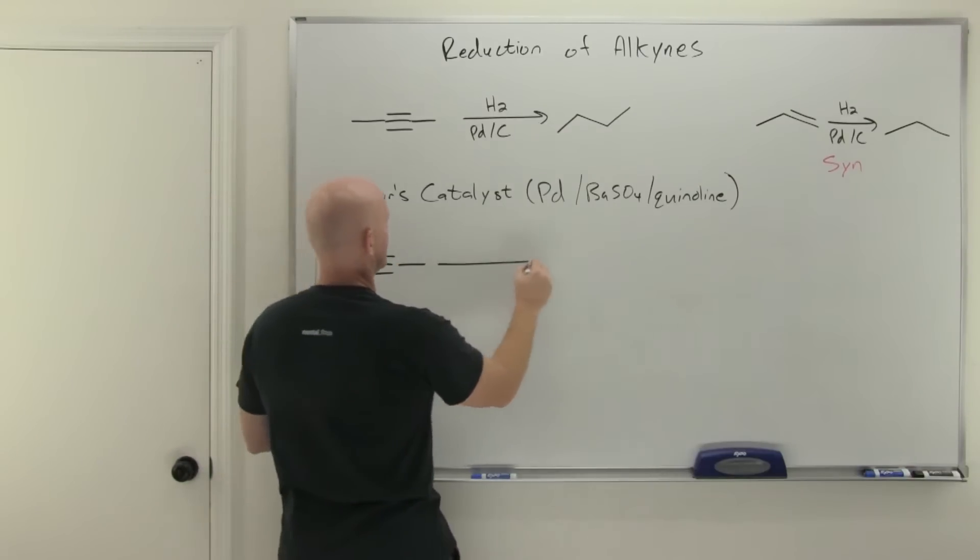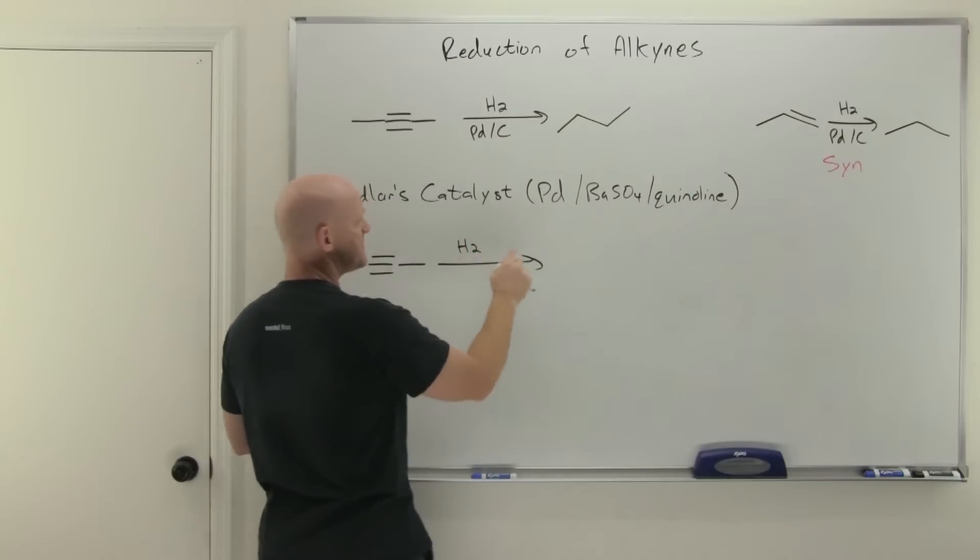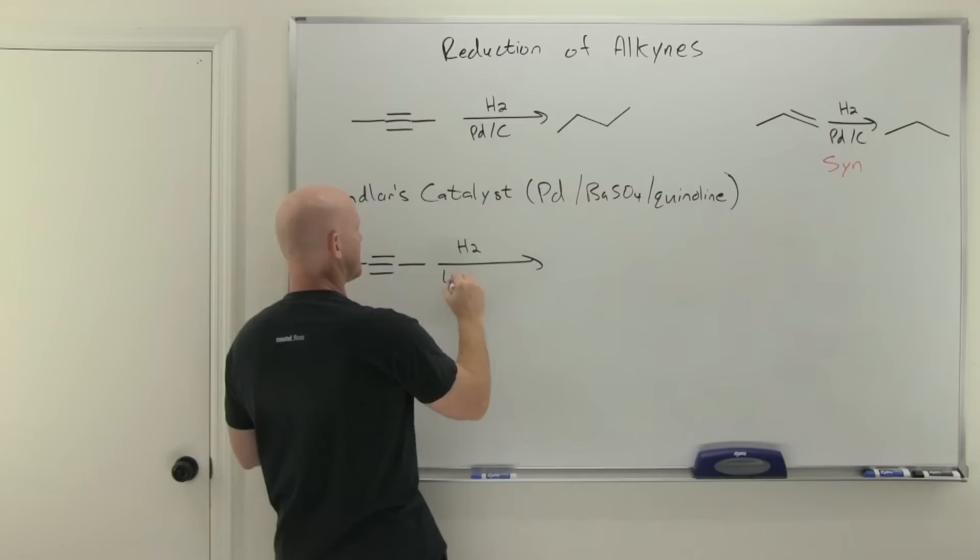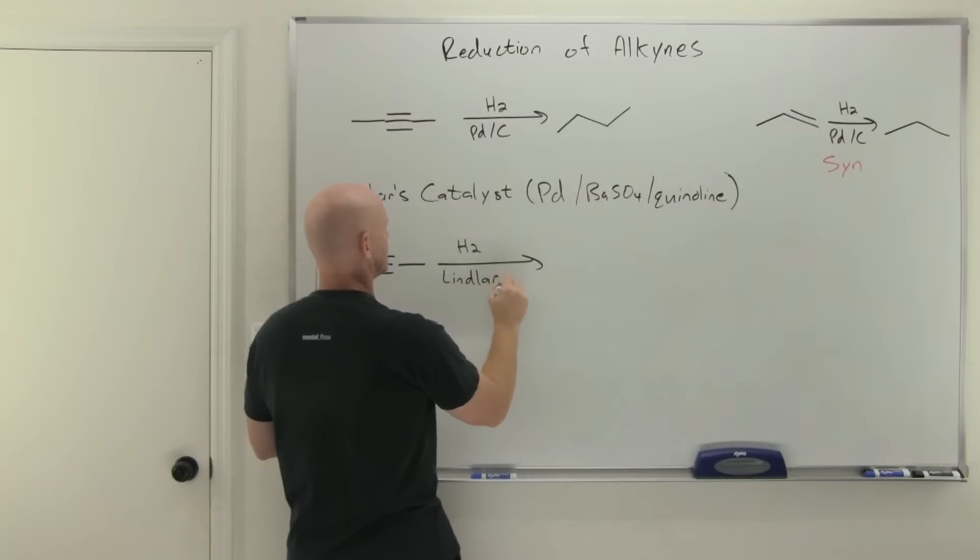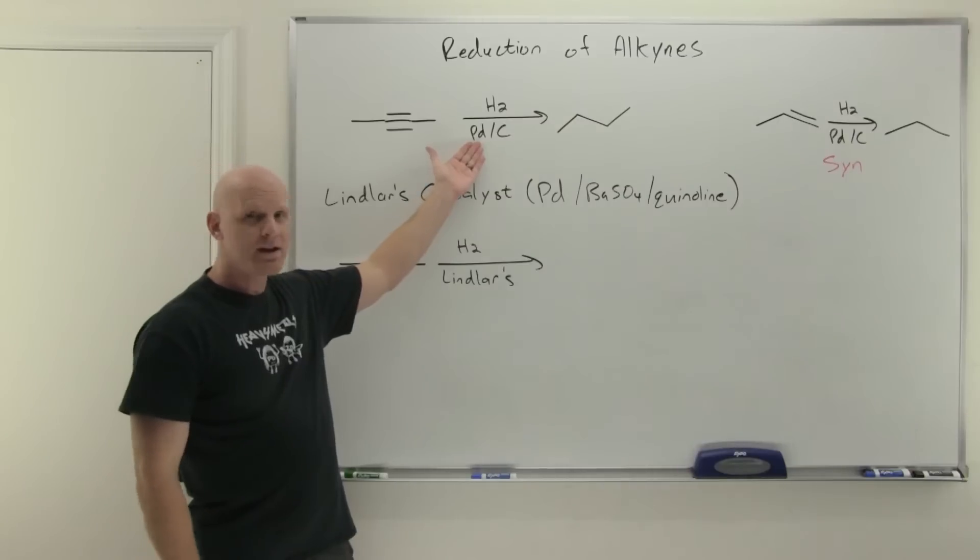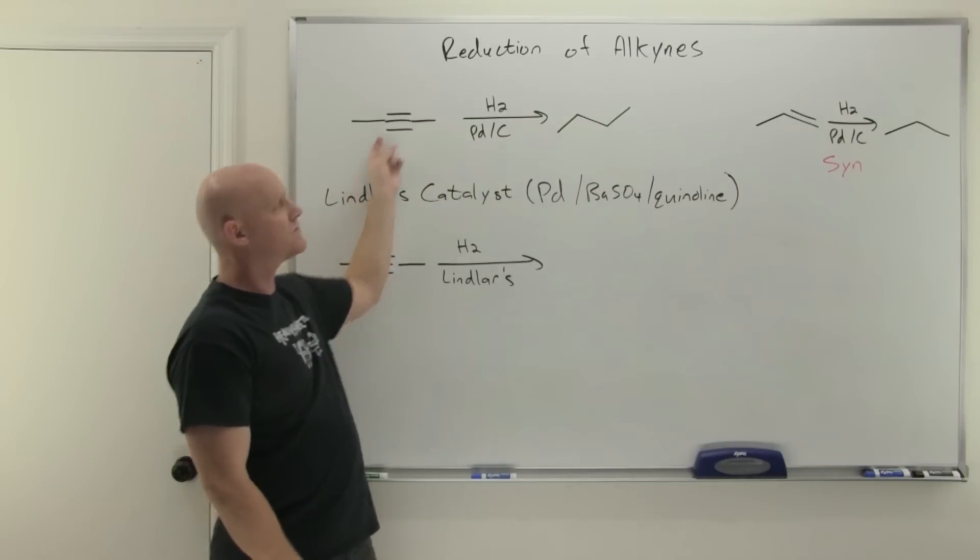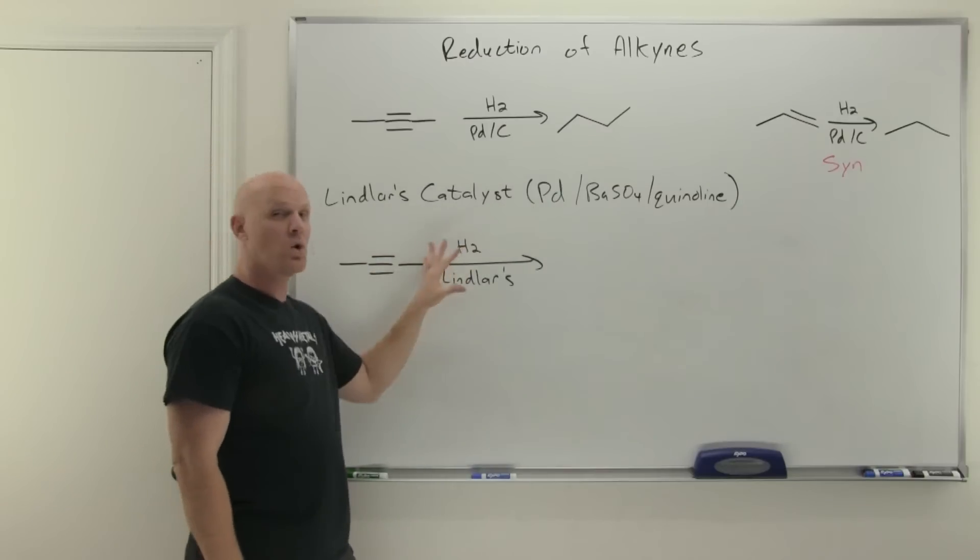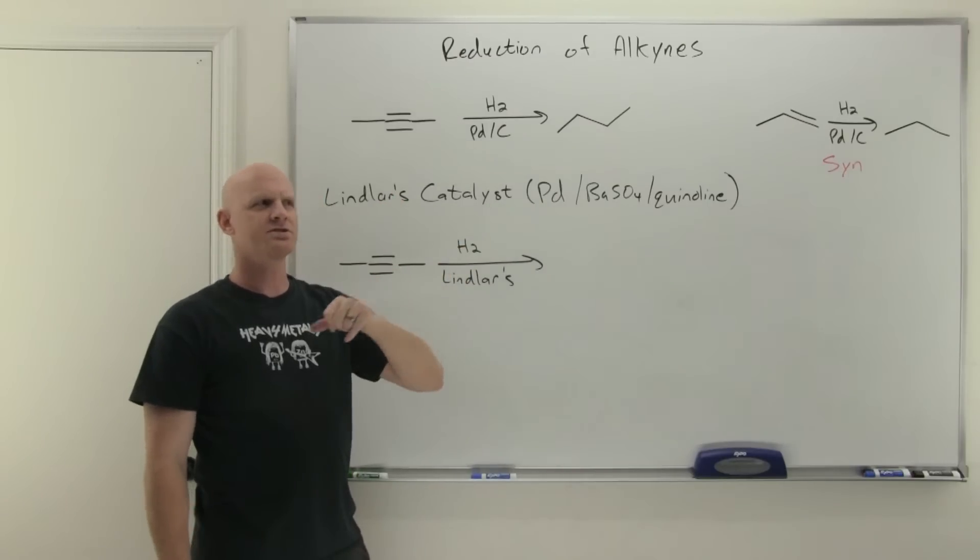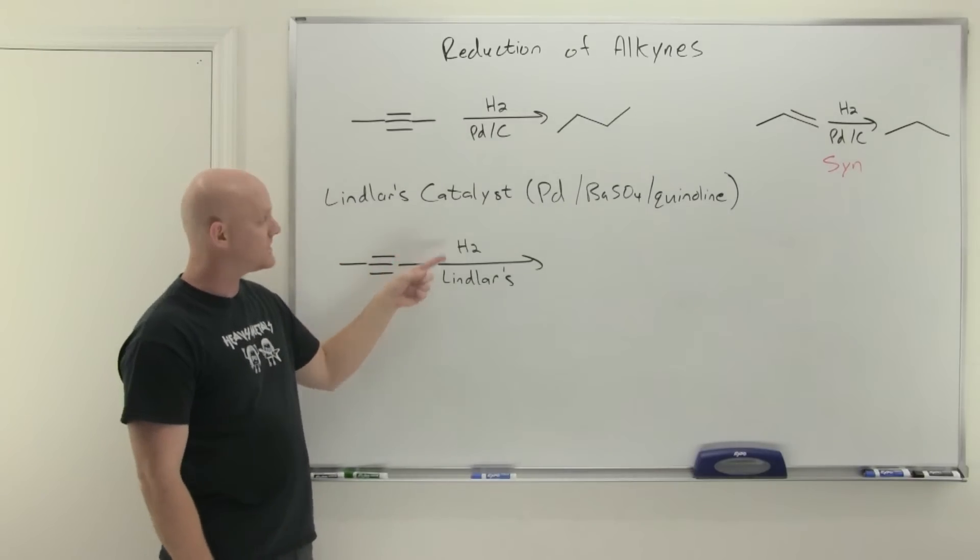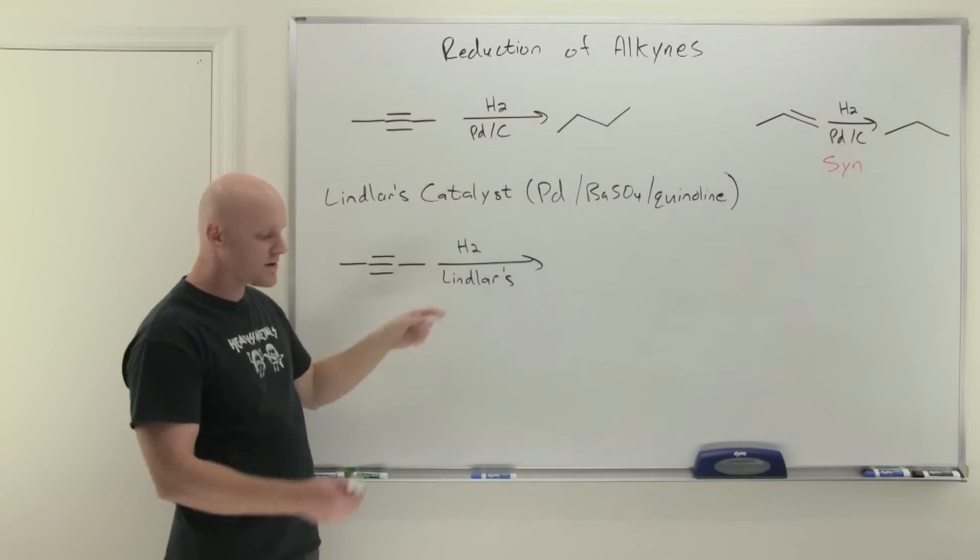We start with an alkyne once again and now we're going to add H2, and some people write all this out as the catalyst, but most of the time you're probably just going to see it written as Lindlar's. If you see H2 and regular palladium or platinum or nickel, that's supposed to reduce it all the way to an alkane. But if you see H2 and palladium and a whole bunch of other stuff—a whole bunch of crap with your palladium—that's Lindlar's catalyst. Most of the time you're going to see it written just as H2 and Lindlar's.